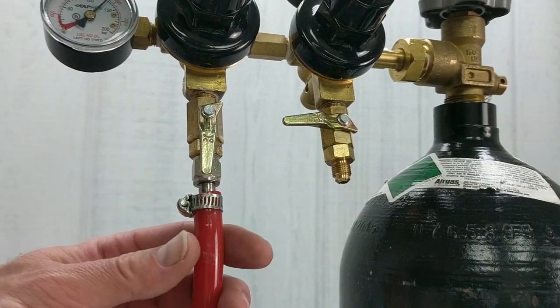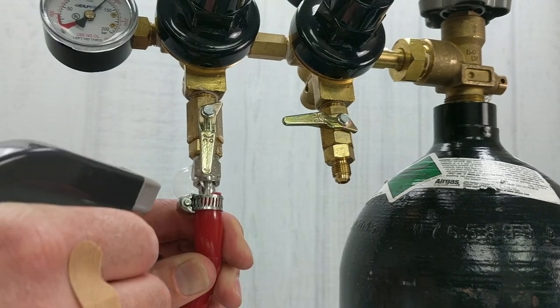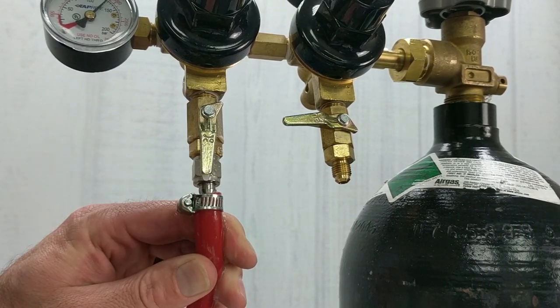That seemed to do the trick there, but it looks like we also have a leak where the hose is being clamped onto the barb.